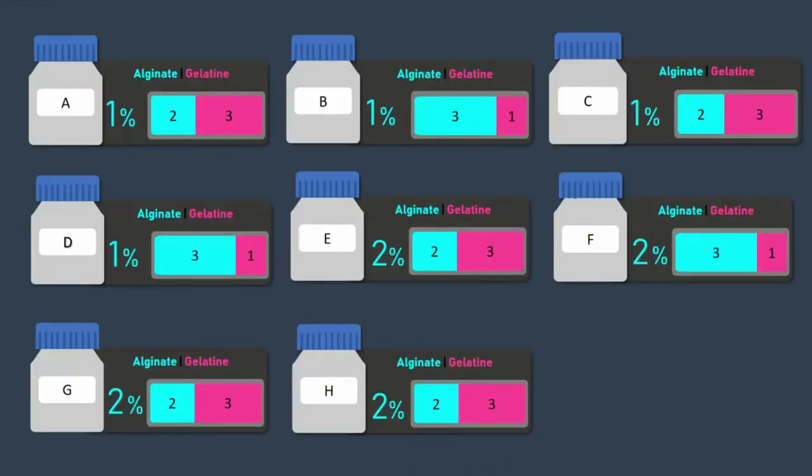For the bioprinting process, we first fabricated the hydrogels, which served as the matrix for the HEPG2 cells. Since alginate is known to poorly promote adhesion of cells, which is important for survival and proliferation, we also added gelatin to introduce adhesion sites.